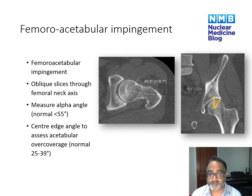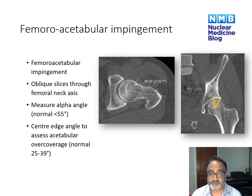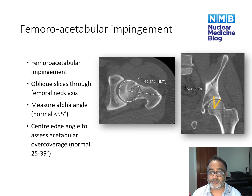When looking for femoral acetabular impingement, we perform oblique slices through the femoral neck. The image on the left shows how we can measure the alpha angle — the angle between the femoral neck and the edge of the femoral head. We draw a circle around the femoral head; the center point acts as the focal point for the angle between the femoral neck and the point where the circle meets the femoral neck. This should be less than 55 degrees. In this case it's 60 degrees, indicating a slight convexity of the femoral neck likely causing some impingement.